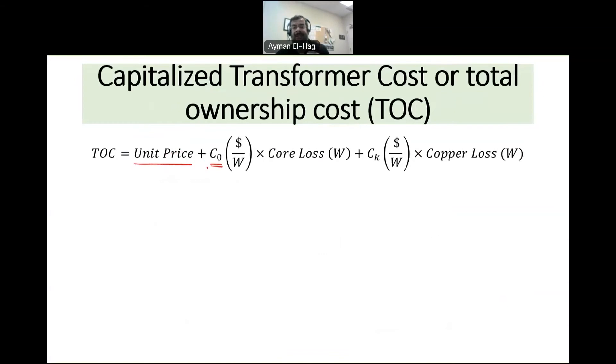Now with this understanding we can answer the question. So this is the capitalized formula, and in some literature we call it total ownership cost or TOC. It equals the unit price - this is the price of the transformer from the manufacturer - plus C₀ which is the factor that we multiply with the core loss, and Cₖ or the factor we multiply by the copper loss.